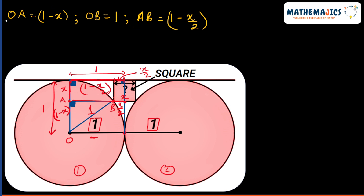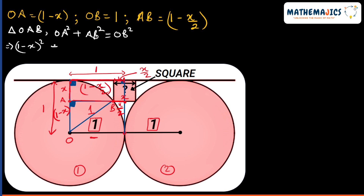Now we can apply Pythagoras' theorem in triangle OAB: OA² + AB² = OB². So that gives us (1 − x)² + (1 − x/2)² = 1².